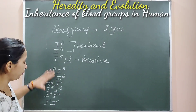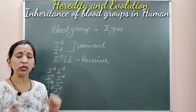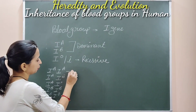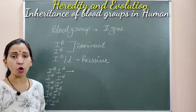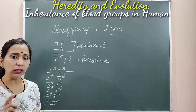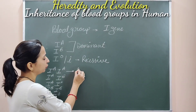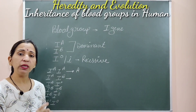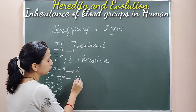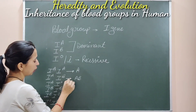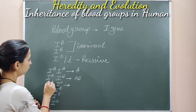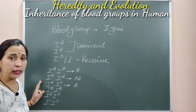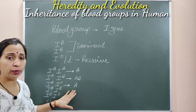On the basis of these allele combinations, the blood group of any human being can be decided. If Ia is present in homozygous condition (Ia-Ia), the blood group will be A. When Ia comes with Ib, the blood group will be AB. When Ia comes with Io — a heterozygous condition — the blood group will still be A, because Ia is dominant and Io is recessive.